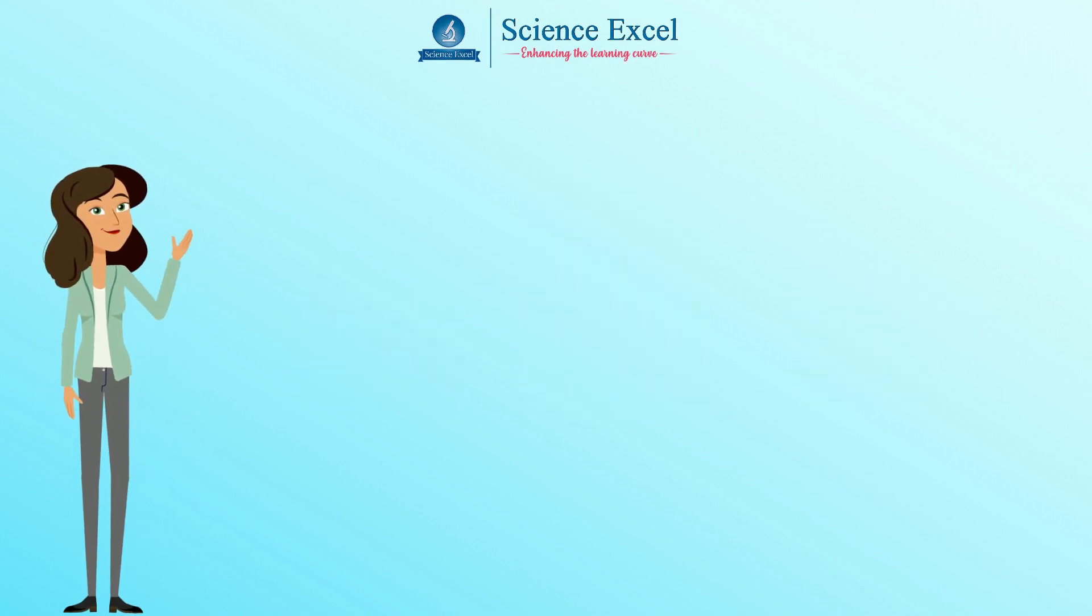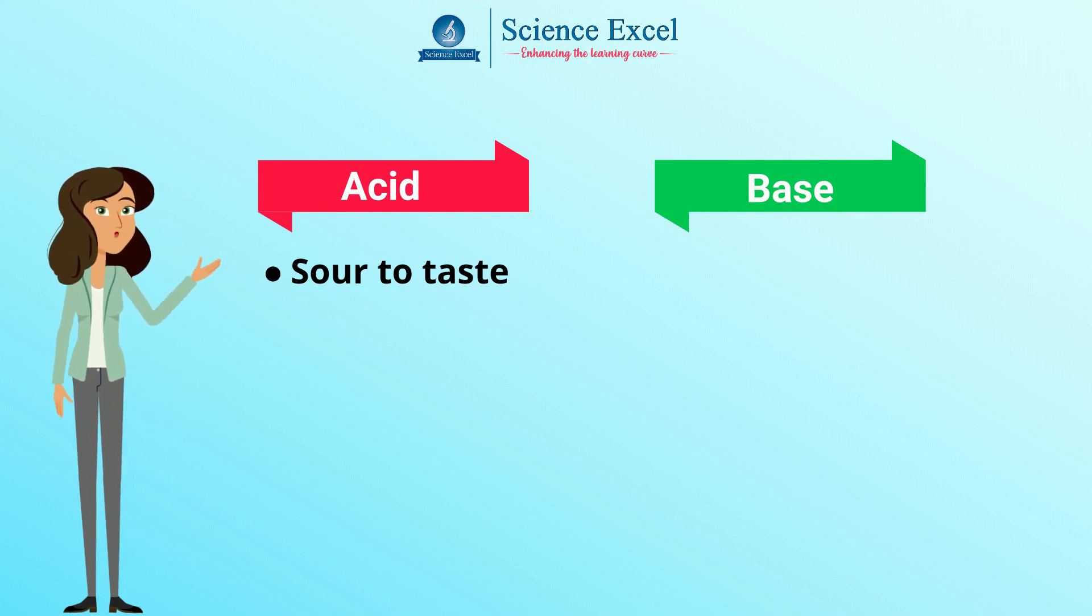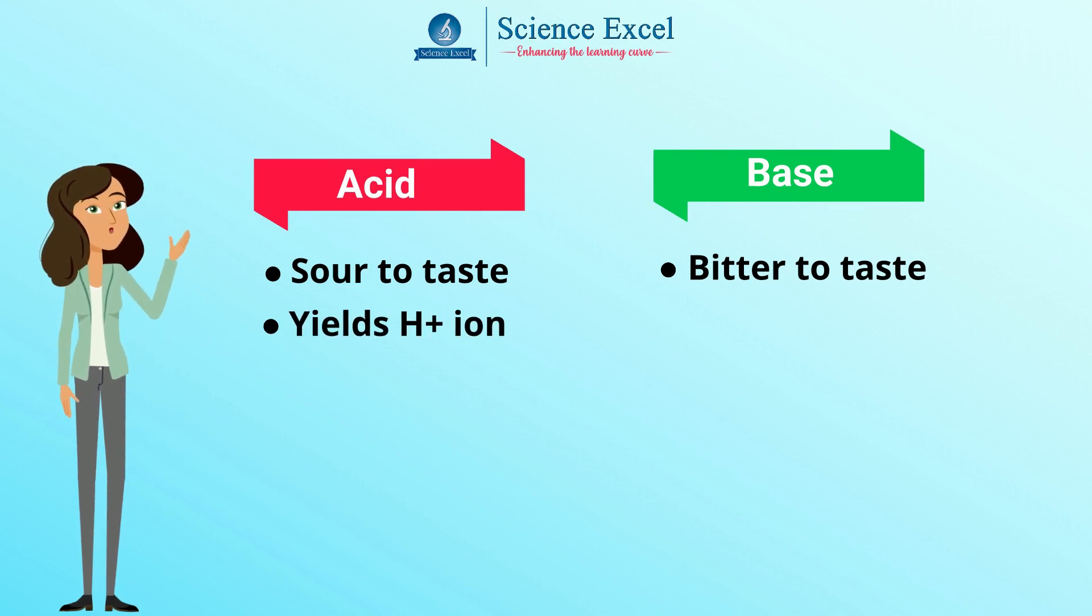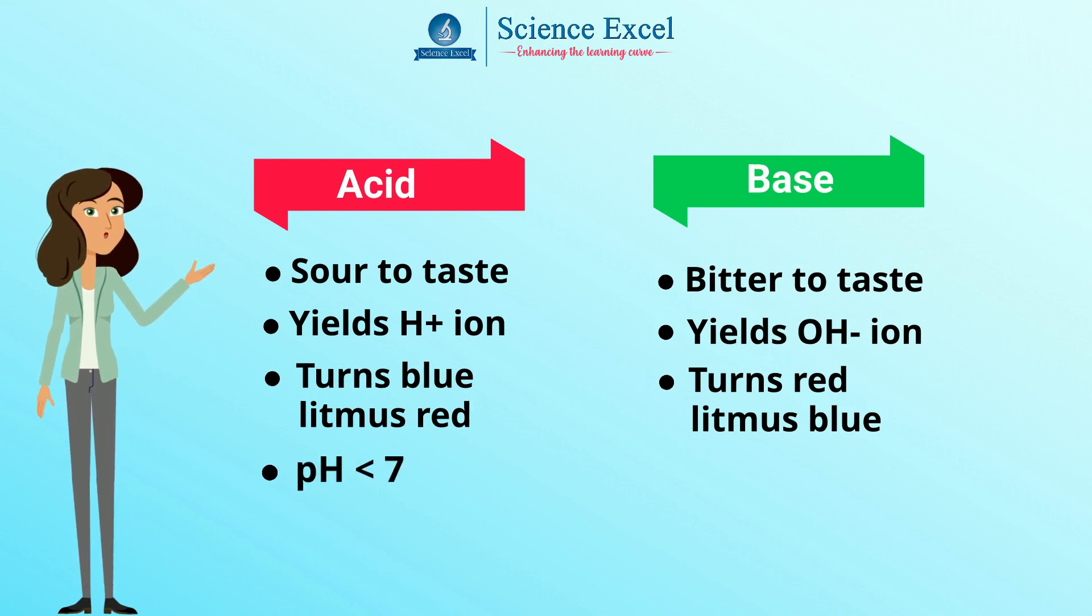Let us quickly recap the differences between an acid and a base. An acid is sour to taste whereas a base tastes bitter and has a soapy feel. An acid yields a hydrogen ion and a base yields a hydroxide ion when dissolved in water. An acid turns blue litmus paper red whereas a base turns red litmus paper blue. The pH of an acid is less than 7 whereas the pH of a base is more than 7.